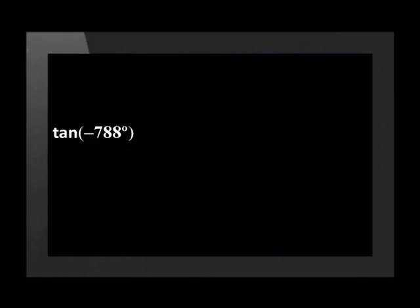The trig ratio stays the same when you add or subtract 360 degrees, so we can now change negative 68 degrees to a positive angle by adding 360 degrees. This means that tan of negative 788 degrees equals tan of negative 68 degrees, which equals tan of 292 degrees. Once we have written the ratio with an angle between 0 and 360 degrees, we can reduce the angle to an acute angle using the CAST diagram.